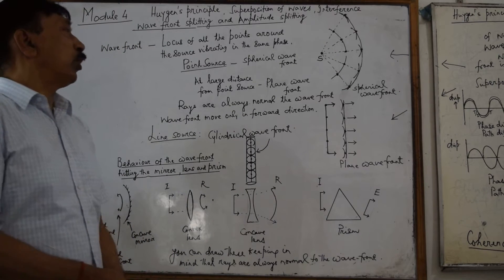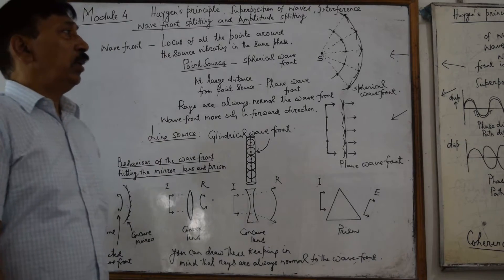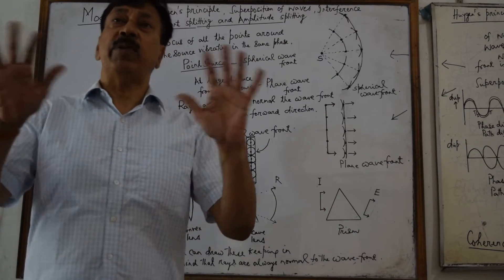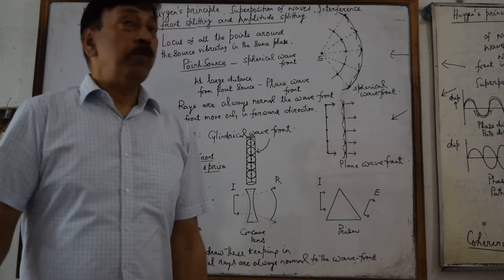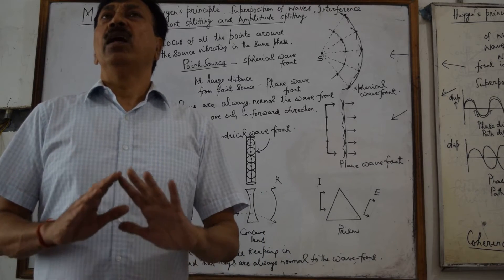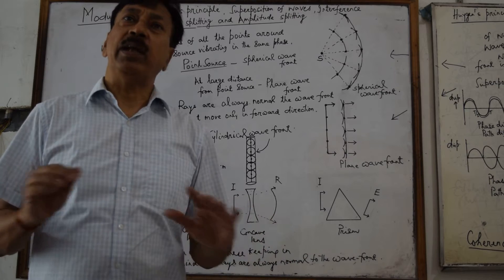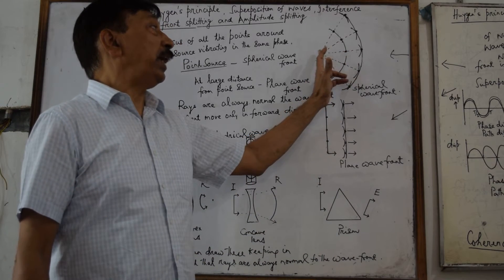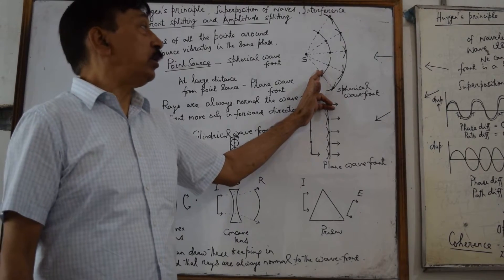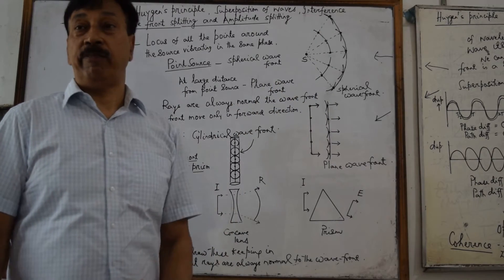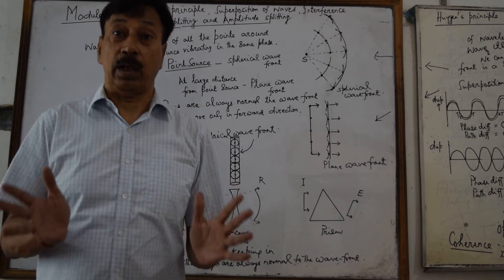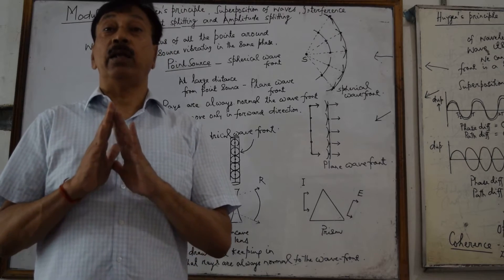Now let us talk about what a wavefront is. If you consider a source in an isotropic medium — isotropic medium means a medium having similar properties all around — it disturbs the particles, the ether particles in this case. And since the wave propagates with the same speed in all directions, the particles at the same distance from the source in different directions will be vibrating in the same phase. The phase is something which gives you complete information about the state of the particle — where the particle is with respect to the mean position and in which direction it is moving.